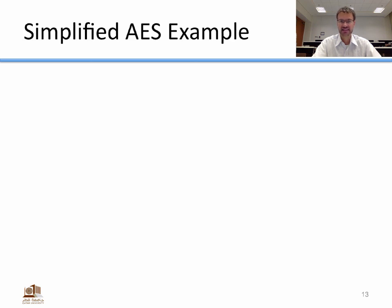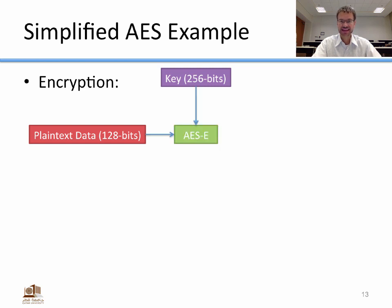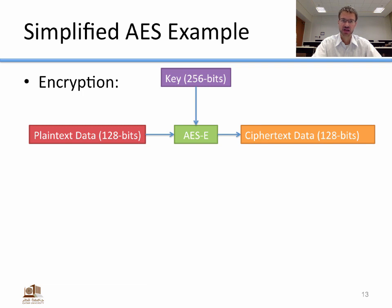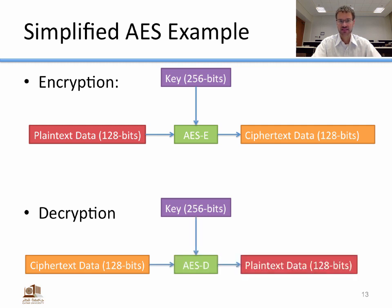Here's a simplified AES example. For encryption, we take one block of plain text — 128 bits for AES — and a 256-bit key, run it through the AES encryption algorithm, and get 128 bits of cipher text. The plain text block becomes a cipher text block of the same size. For decryption, we put the cipher text and the same key into the AES decryption algorithm and get back the plain text.